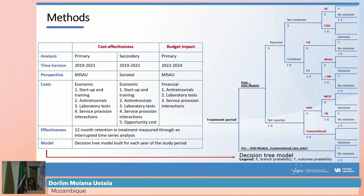For both cost-effectiveness and budget impact analysis, the effectiveness outcome was 12-month retention in care, measured using an interrupted time series analysis. The model for this economic analysis was a decision tree model, shown on the right side of this slide.